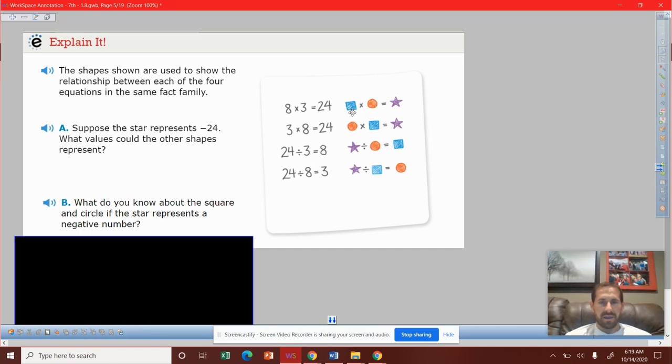Since we're always multiplying in the top here, a square by a circle, we know in order to get this star to be negative, we must have had one of these to be negative and the other one positive. Same here.